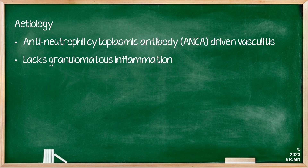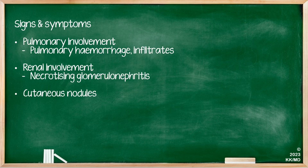As for its aetiology, it is a type of anti-neutrophil cytoplasmic antibody, or ANCA-driven vasculitis. However, importantly, it lacks granulomatous inflammation. As for its signs and symptoms, it very frequently has pulmonary and renal involvement, normally in the form of either pulmonary haemorrhage or infiltrates, and it can also be accompanied by cutaneous nodules.